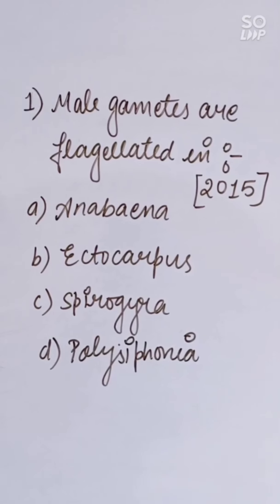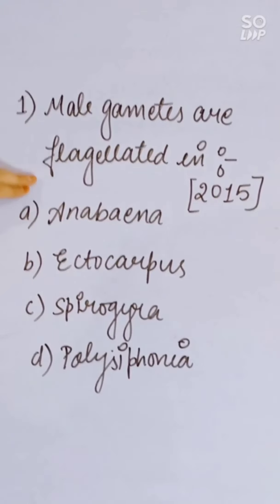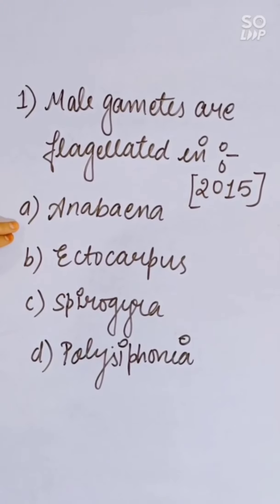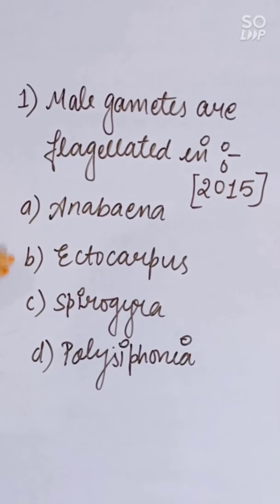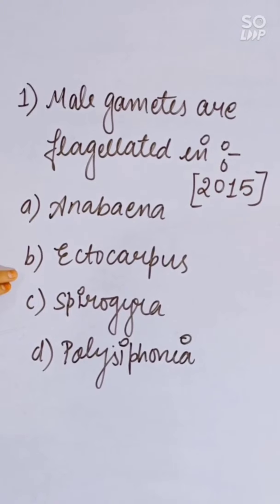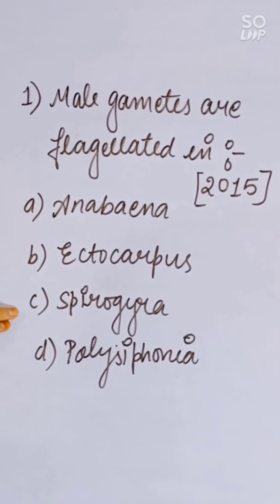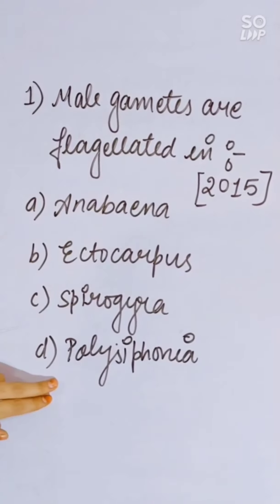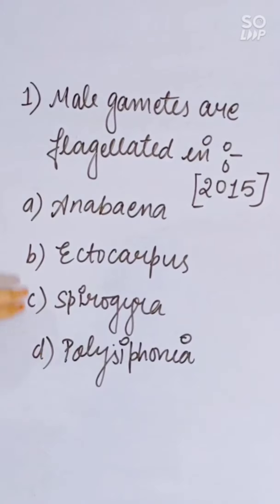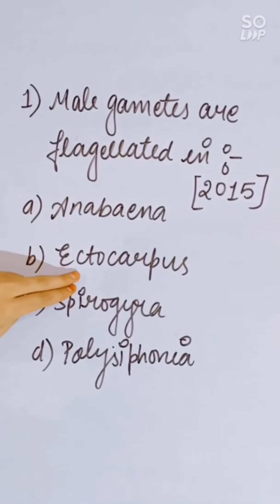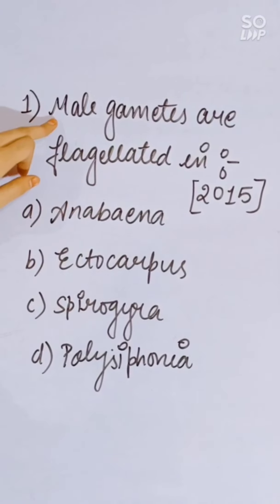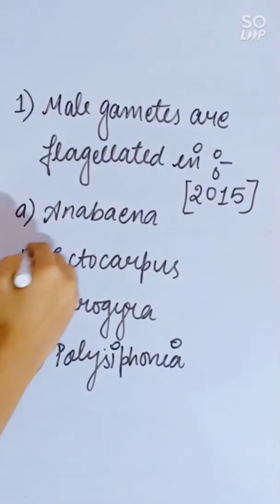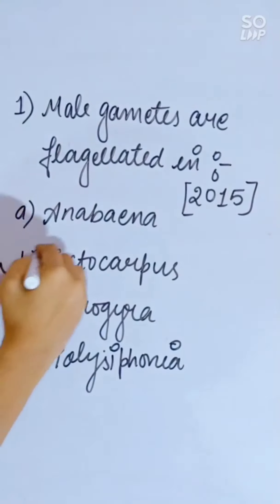NEET 2015 question: Male gametes are flagellated in which organism? Options: Anabaena, Ectocarpus, Spirogyra, or Polysiphonia. Ectocarpus has flagellated male gametes. Correct answer is Ectocarpus.